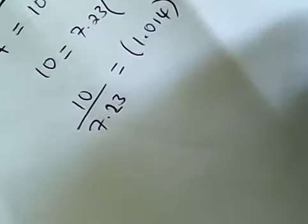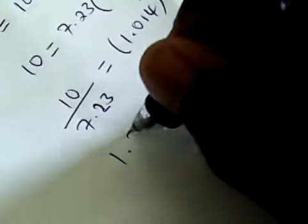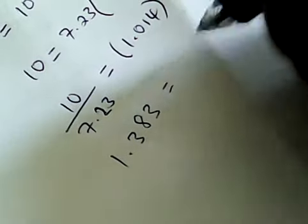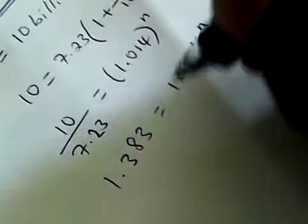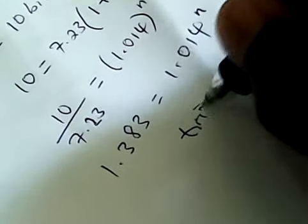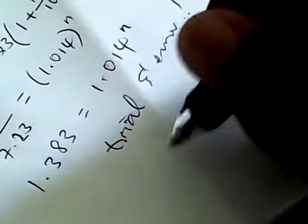Okay, now here we can do a bit of maybe guesswork. 1.383. You can try to find N by trial and error. So we can do this using trial and error. That's one. The other way is to use logs.